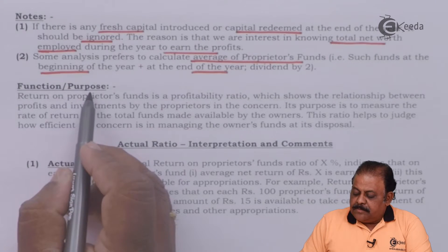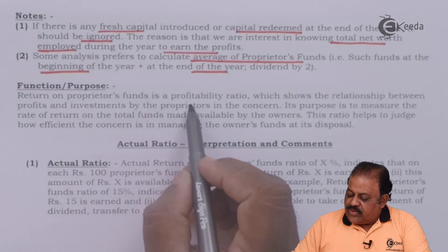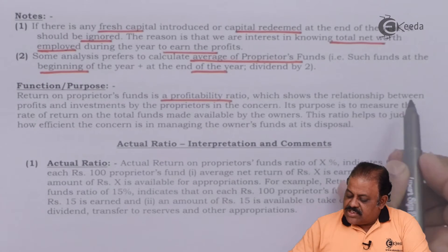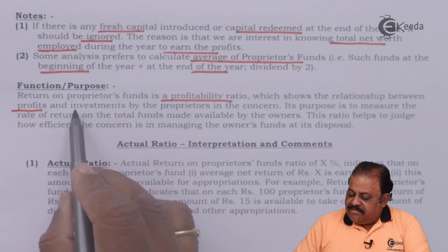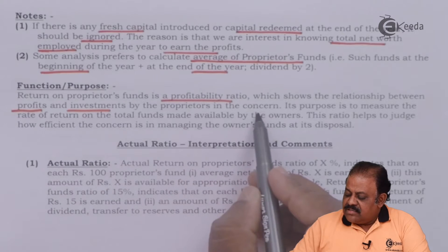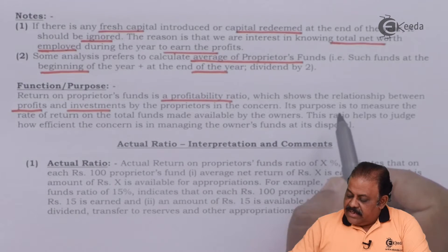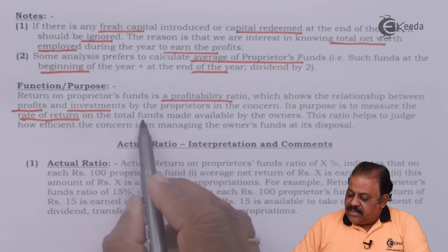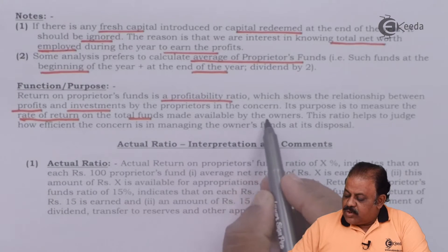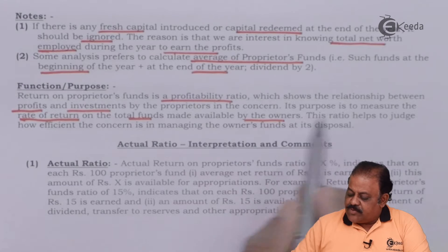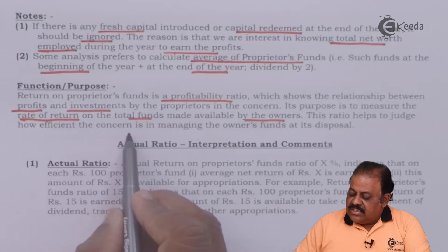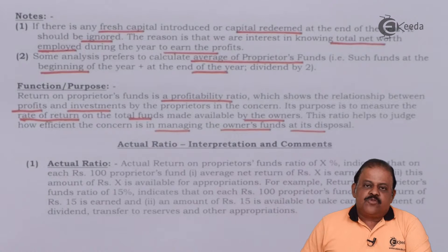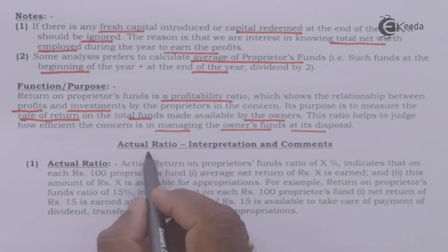Return on proprietors fund is a profitability ratio which shows the relationship between profits and investment made by the proprietors in the concern. Its purpose is to measure the rate of return on capital funds made available by the owners. This ratio helps to judge how efficiently the concern is managing the owners' fund at its disposal.